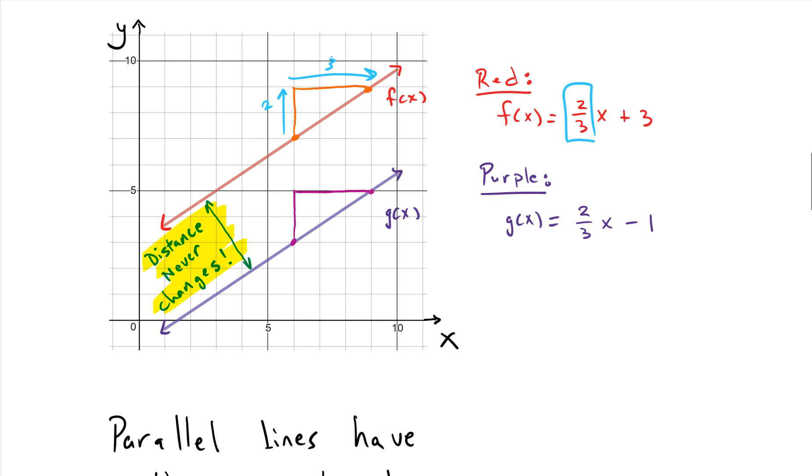If we look at the purple, which is parallel to the red, what do we get? We get two and we get three. Same thing, two-thirds.